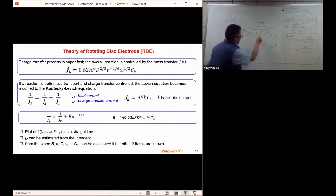For example, the diffusion coefficient and the charge transfer number, because we can always know the concentration of the reactant species and the viscosity of the electrolyte to measure. So if we know the diffusion coefficient, we can calculate the transfer number n.